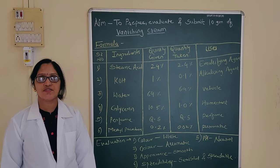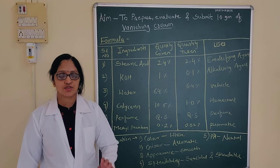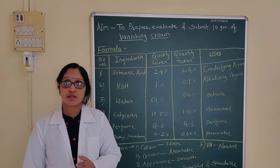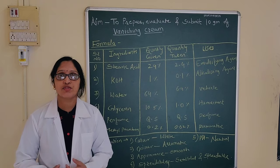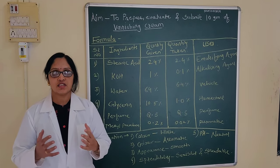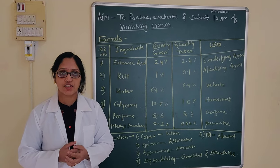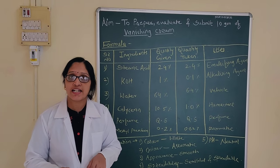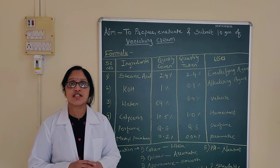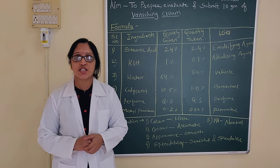Good morning students. Today we are here to learn about cosmetic formulation. We will prepare a formulation of vanishing cream. Vanishing cream is used for beautifying purposes, it can act as a foundation base for makeup, or it is used to moisturize the skin. As it is applied on the skin, it vanishes — it forms a very thin layer and disappears immediately. This is known as vanishing cream.